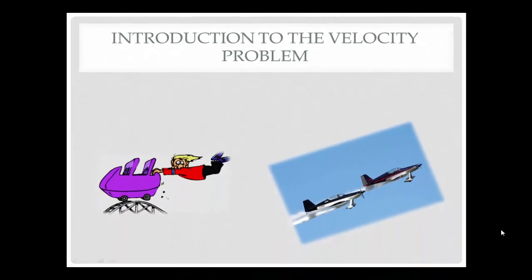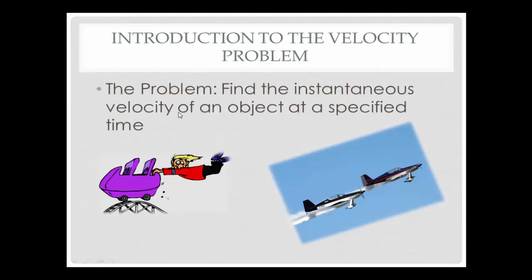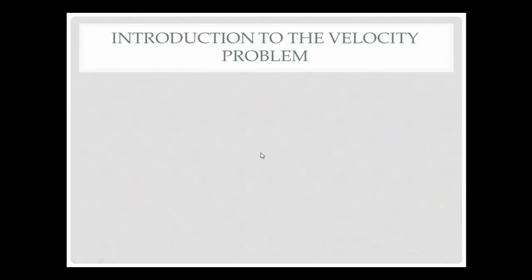We're going to take a look at the introduction to the velocity problem. This is assuming you've already watched the introduction to the tangent problem. This is going to be a discussion of what the velocity problem is and how that relates to the tangent problem. So let's start by stating what we mean by the velocity problem. The velocity problem is to find the instantaneous velocity of an object at a specified time. We want to lay some groundwork before we approach this problem.